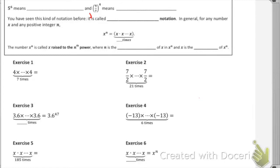Today we're looking at lesson one: exponential notation. You've already explored the fact that five to the sixth means five as a factor six times, and so that's five times five times five times five times five times five.